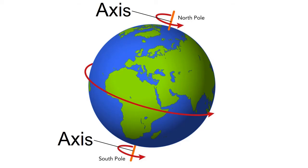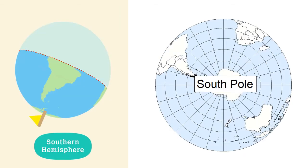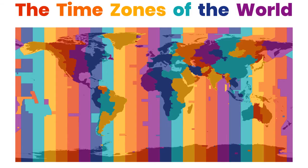The North Pole and the South Pole are the two opposite poles of Earth's axis, and they are directly opposite to one another. The North Pole is located in the middle of the Arctic Ocean in the Northern Hemisphere, and the South Pole is located in Antarctica continent in the Southern Hemisphere.